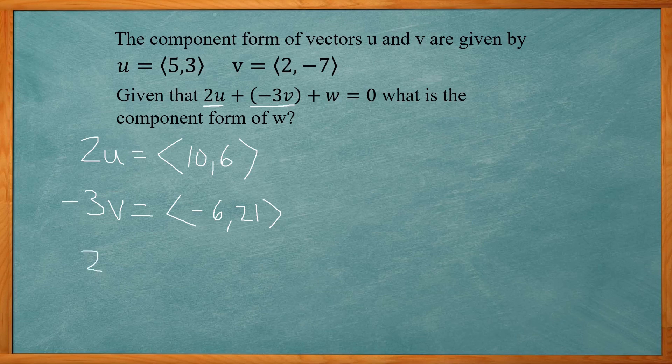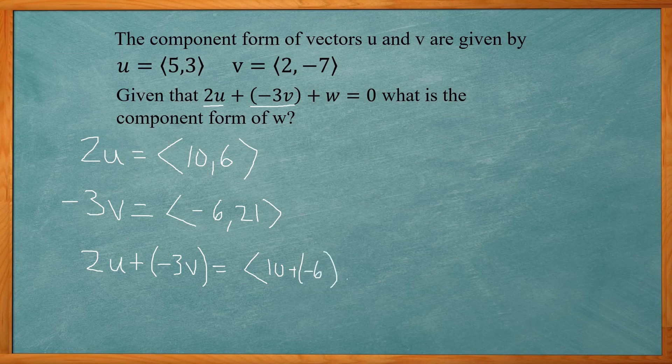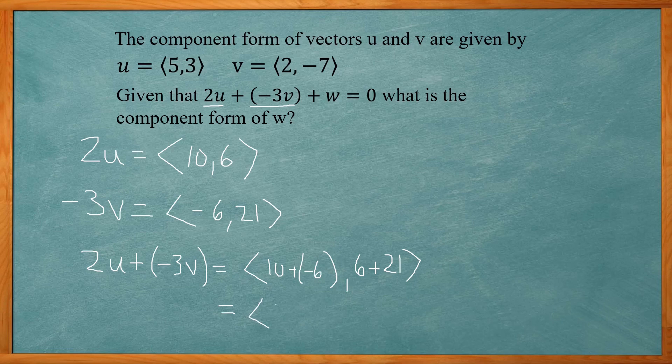And then if I want to add those two together, that'll be 10 plus a negative 6, comma 6 plus 21. So that gives me (4, 27).